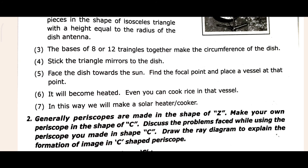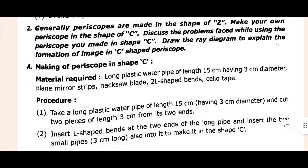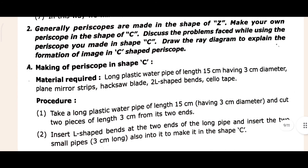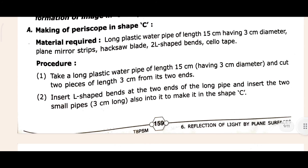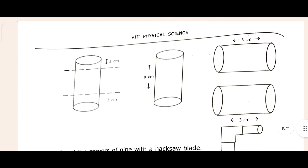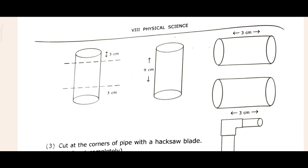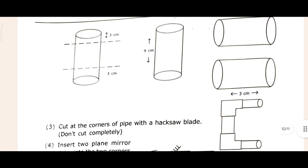Come to the second project: generally periscopes are made using plane mirrors. The process and experiment is given here along with a figure — just look at this figure showing the diagram for the formation of image.